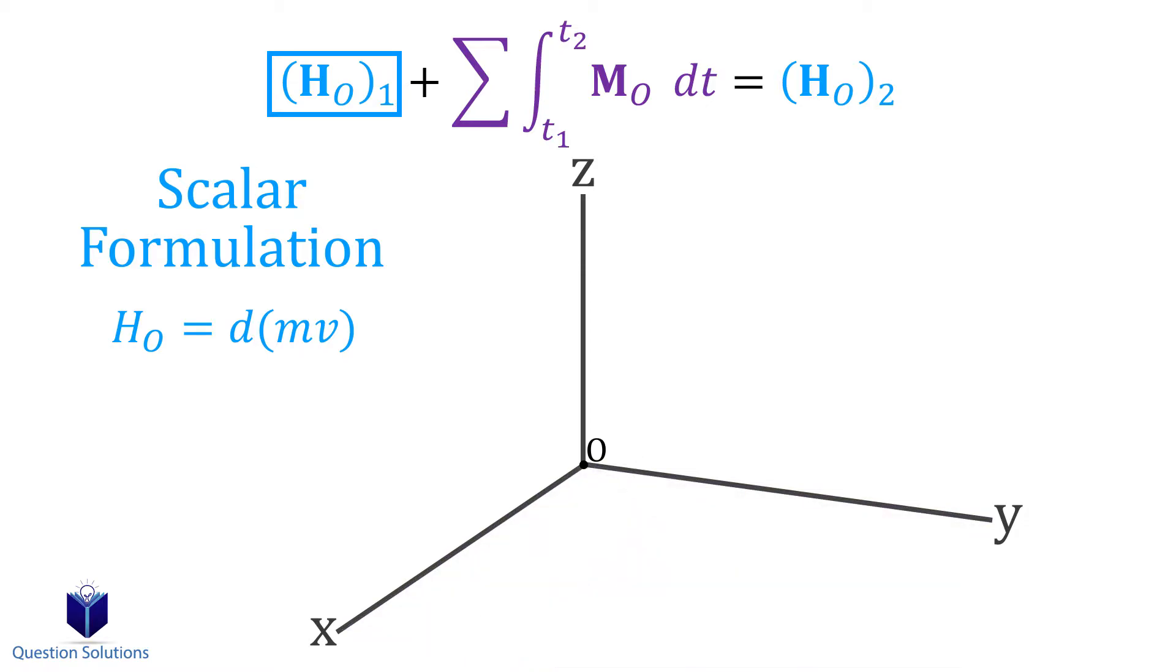If we want to figure out the angular momentum when we're looking at a vector formulation, which means the particle is now moving along a space curve, it's pretty similar to before. But now, we're going to use a position vector from point O to the particle, and take the cross product of it with mass times velocity.